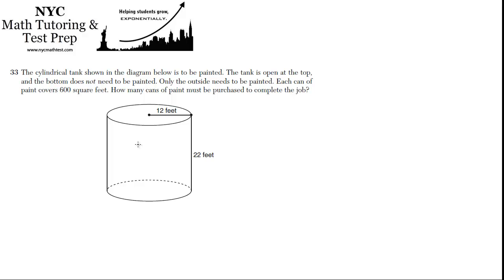33. The cylindrical tank shown in the diagram below is to be painted. The tank is open at the top and the bottom does not need to be painted. Only the outside needs to be painted. Each can of paint covers 600 square feet. How many cans of paint must be purchased to complete the job?